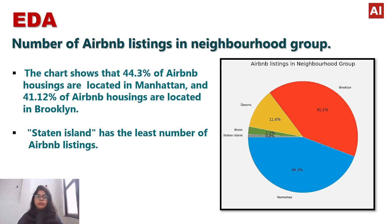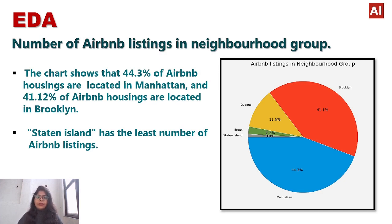Our first key finding is the number of Airbnb listings in each neighborhood group. From this pie chart, Manhattan has 44.3% of listings, Brooklyn 41.1%, Queens 11.6%, Bronx 2.2%, and Staten Island 0.8%. The chart shows that Manhattan has the highest number of listings and Staten Island has the least number of Airbnb listings in the neighborhood group.